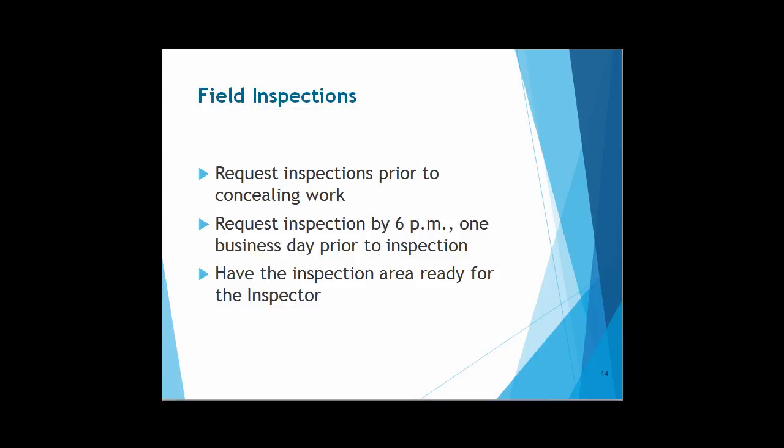We thought it would be helpful to have a brief discussion regarding field inspections. It's important that inspections are scheduled prior to any work being concealed. So in the event that a water line or sewer line was being replaced, it would be critical that the work was inspected prior to it being covered by dirt. Or if any electrical or plumbing work was being done within existing walls, that work would be inspected prior to sheetrock. It's also important that inspections are scheduled by 6 p.m. at least one business day prior to the inspection. So for a Monday inspection, the request must be made by 6 p.m. on Friday; for a Wednesday inspection, call by Tuesday at 6 p.m. It's also important to ensure that the inspection area is ready when the inspector arrives.